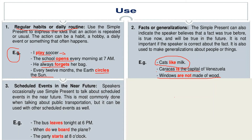The third use that we are going to learn is scheduled events in the near future. We can also use the simple present tense for near future events. Speakers occasionally use simple present tense to talk about scheduled events in the near future. If we have scheduled something — maybe in the morning or in the evening — it is near future, and we can use simple present tense. This is most commonly done when talking about public transportation, but it can be used with other scheduled events as well.